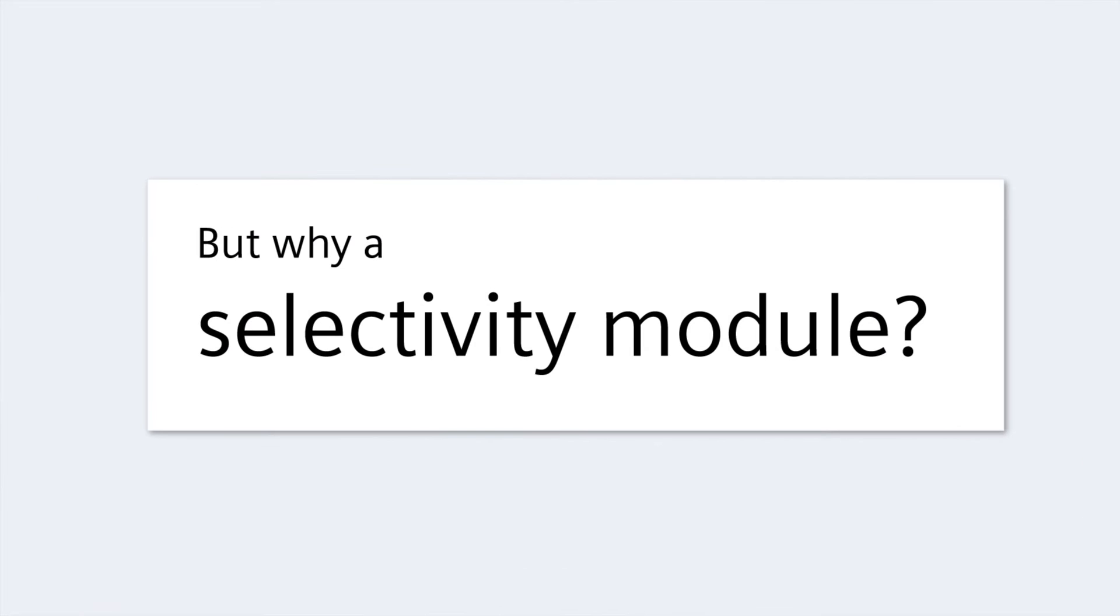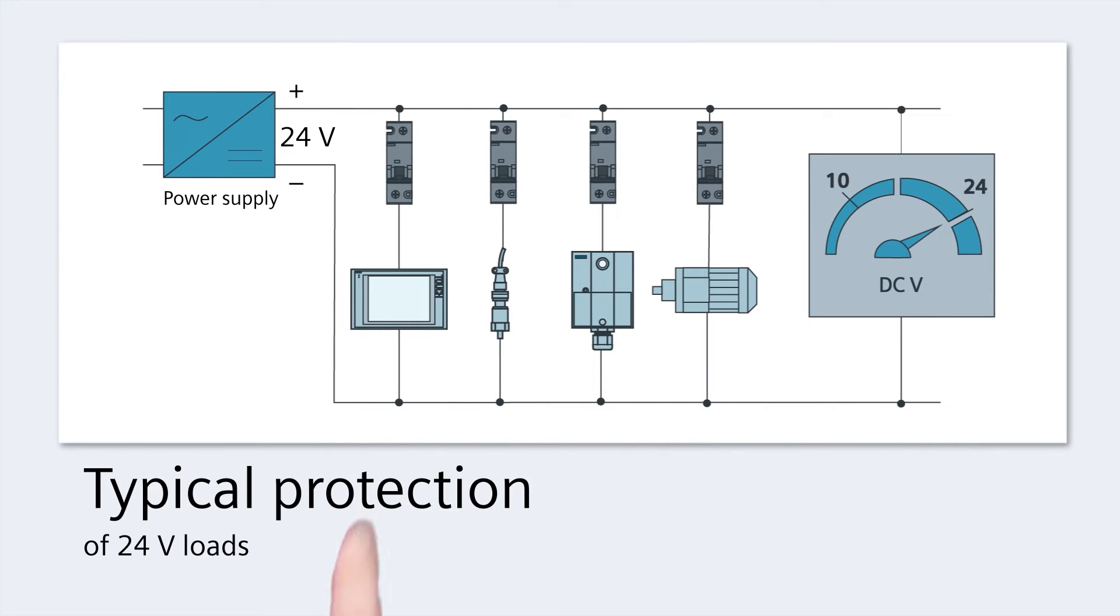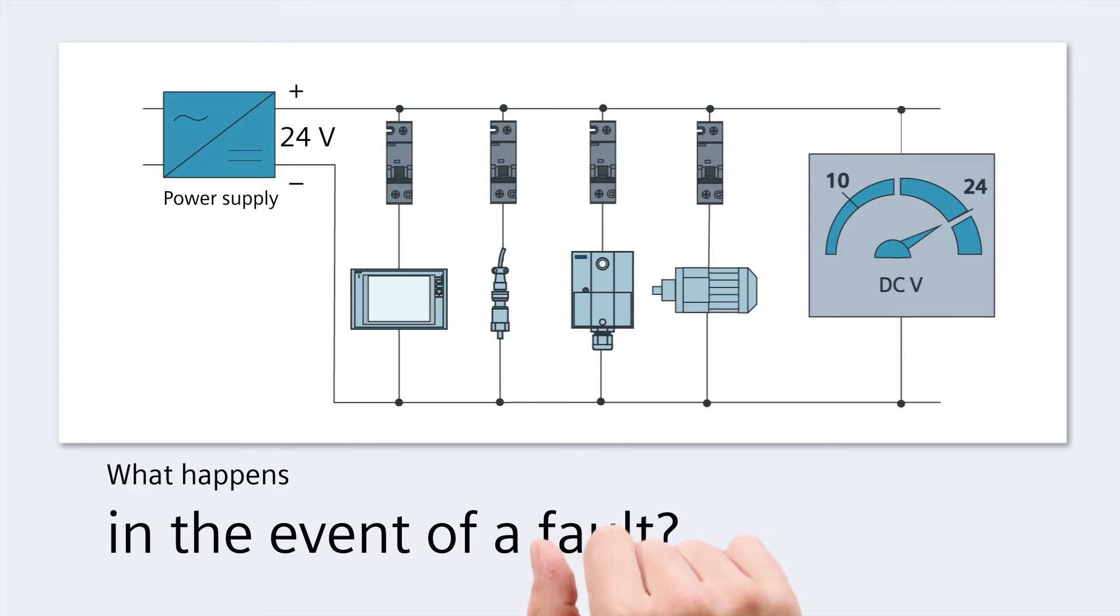But why is a selectivity module necessary? Typically 24 volt loads are protected by means of miniature circuit breakers. What happens if a fault occurs, for example a short circuit?